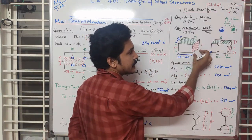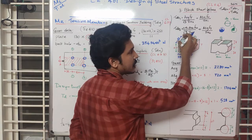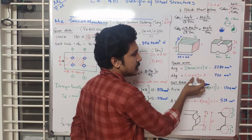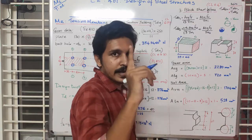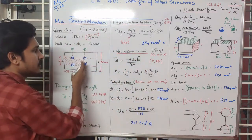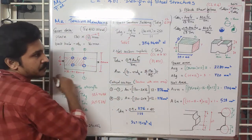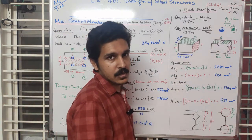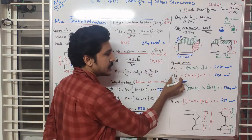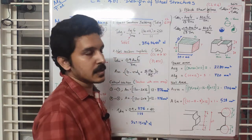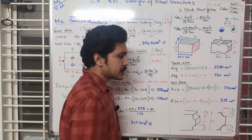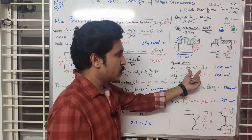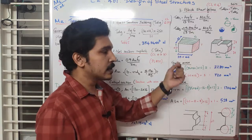ATG is the gross area of the tension plane. The tension plane dimension is 60 mm, and at the interface it is a free surface. Thickness is 12 mm, so ATG equals 60 into 12 equals 720 mm². We now calculate net areas by subtracting bolt hole contributions.